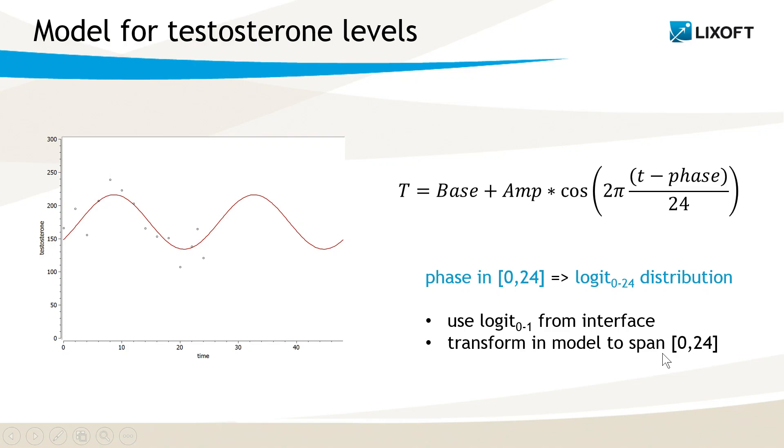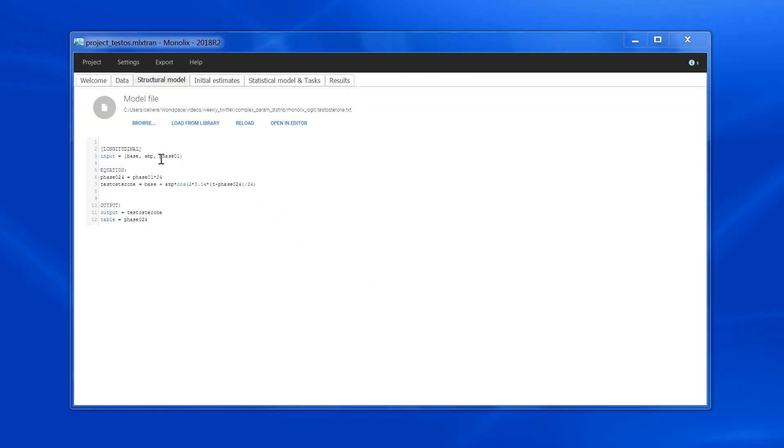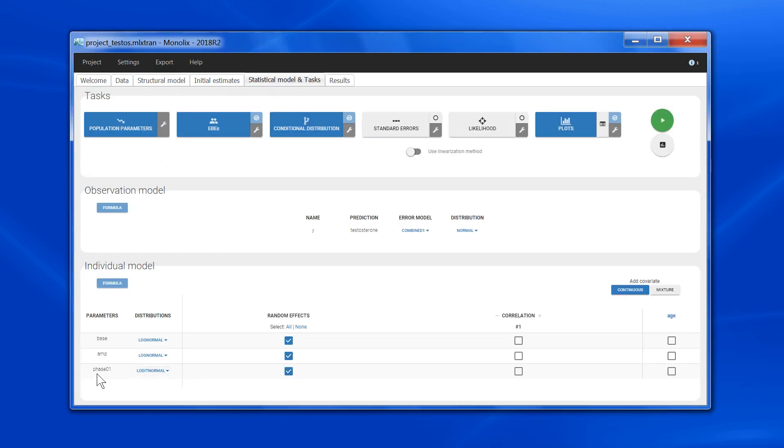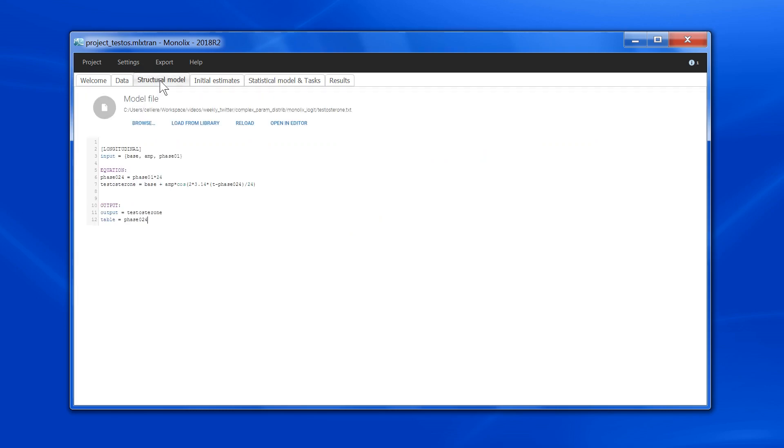So let's have a look in practice. In the model file, I have defined in the input line a parameter phase_0_1. This parameter has a logit normal distribution here, so it means that it can take values between 0 and 1. In the model file, I don't use this parameter directly, instead I describe phase_0_24, that is phase_0_1 multiplied by 24. So phase_0_24 will span from 0 to 24,